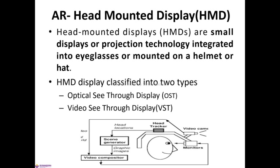The head-mounted display consists of small displays or projection technology integrated into eyeglasses or mounted on a helmet or hat. The head-mounted display is classified into two types: optical see-through display and video see-through display.